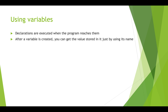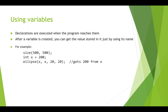Once we've got boxes in memory with values in them, we can actually use them. Here's a small Processing script where we set the canvas size to 500 by 500, create a variable 'x' that holds the integer 200, and then draw an ellipse centered at x, 200. When the compiler reaches that line, it goes and finds the variable, gets the value from it, and substitutes it in.